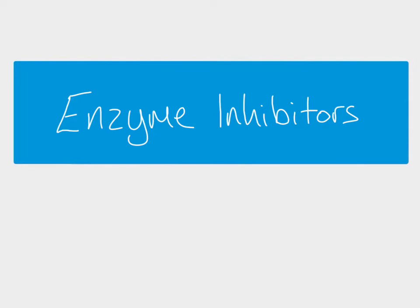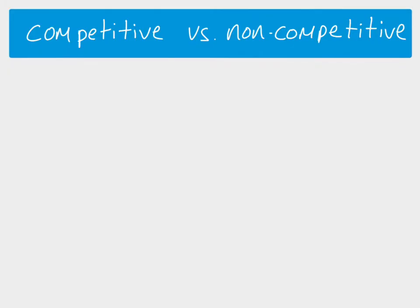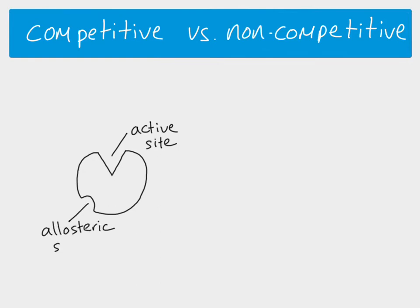This video is all about enzyme inhibitors. There are two kinds of inhibitor: competitive and non-competitive. The enzyme has an active site and somewhere else on the enzyme is something called the allosteric site. An inhibitor will bind either to the active site or to the allosteric site, depending on what kind of inhibitor it is.